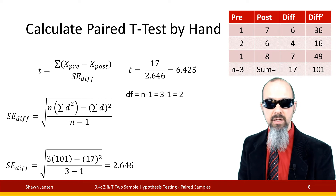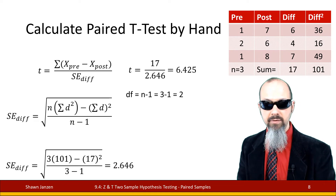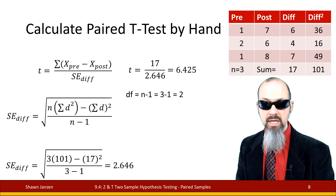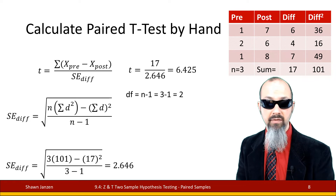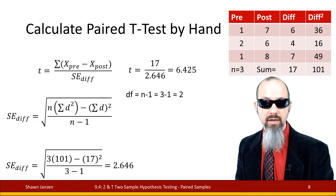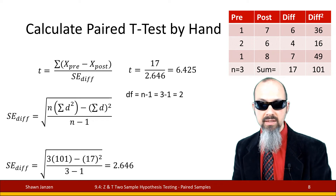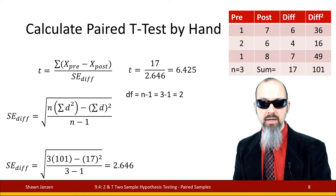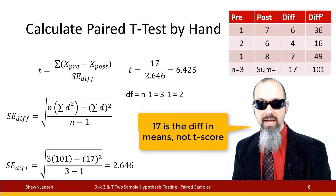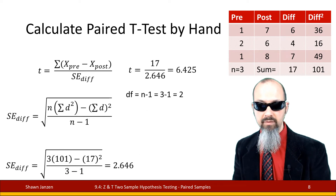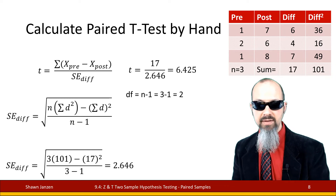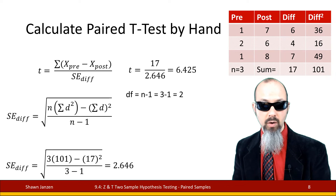To calculate this by hand, I've made a small table on the left with three students who took a pre-test and a post-test, along with columns for the differences and differences squared to help work through the values. Taking d-squared as 101 and the sum of d as 17, I work through the math and find the standard error of the difference is 2.646. Dividing the mean difference of 17 by 2.646 gives a t-score obtained of 6.45, with degrees of freedom n minus one equal to 2.